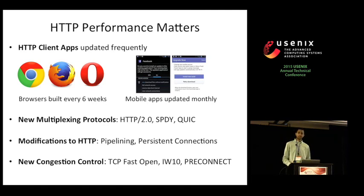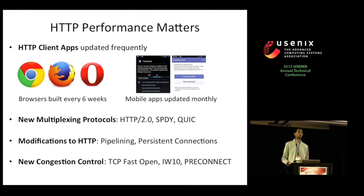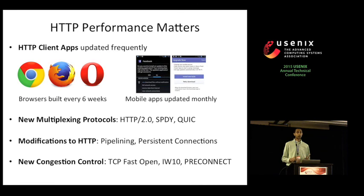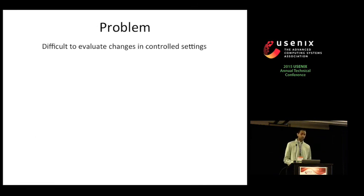While developing each of these changes, it's quite useful to be able to evaluate how that change directly affects application-level performance. For example, a browser developer may want to evaluate how a new JavaScript engine affects web page load times. However, today it's quite difficult to evaluate these changes in controlled experimental settings.